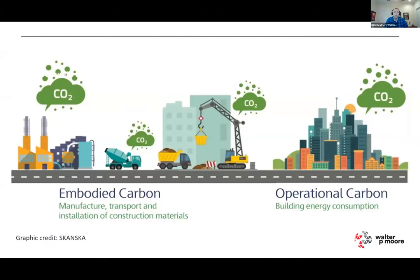Embodied Carbon is what it takes to make the stuff, in the simple way. For a material like concrete, what does it take to extract the aggregate, extract the sand, take the limestone that you're going to turn into cement, then process it, ship it from all the different quarries to the batch plant, get it into the back of the drum, mixed in the truck, delivered, installed, and maintained — and even what happens to it at the end of life. So it's all of the other carbon associated with making, installing, and maintaining the materials.